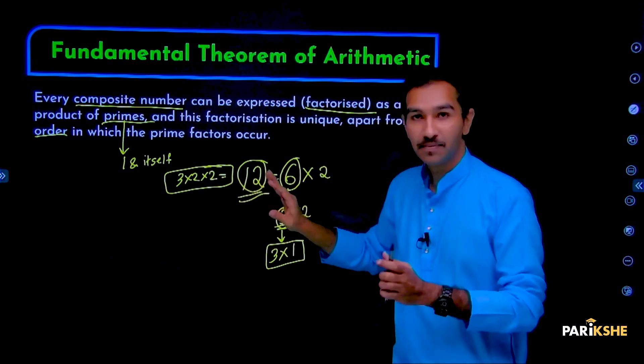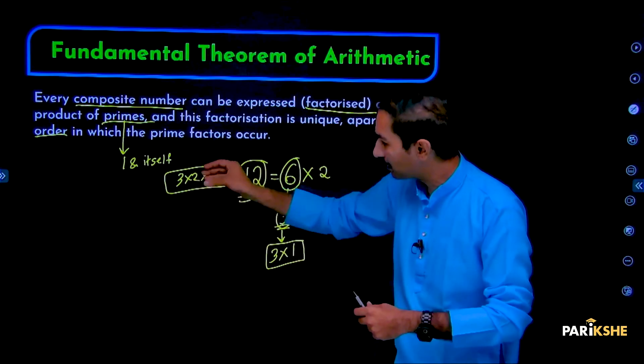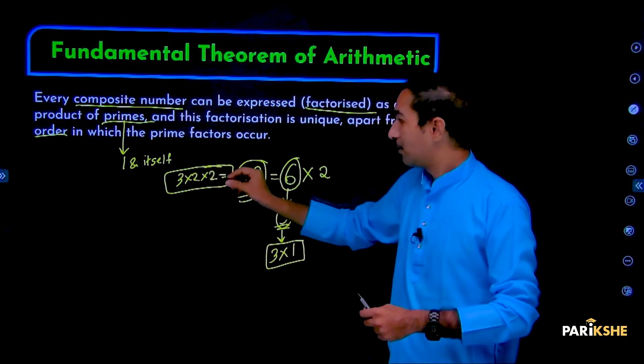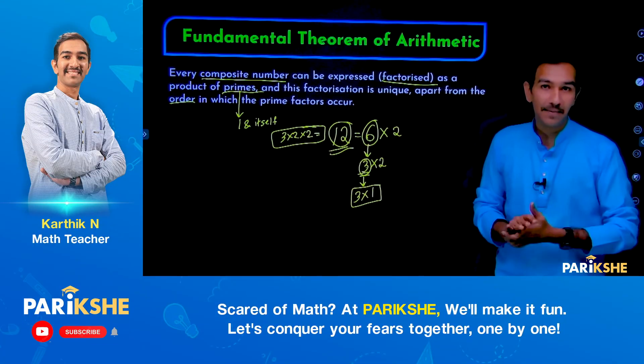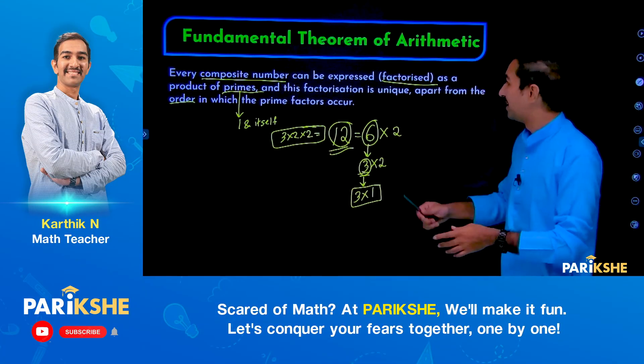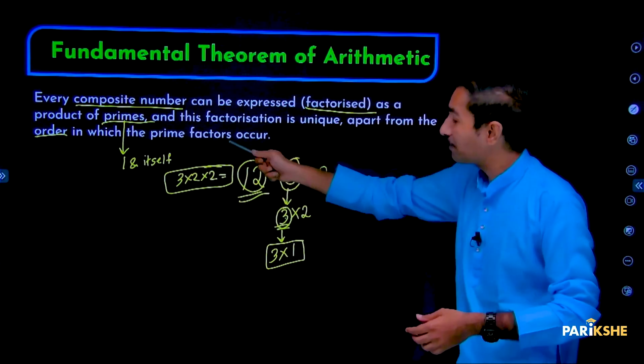So, 3 into 2 into 2. That's it. Other than this, we cannot multiply different primes to get 12. If we take different primes, we won't get 12. Is it possible? No. Right? It is unique apart from the order in which the prime factors occur.